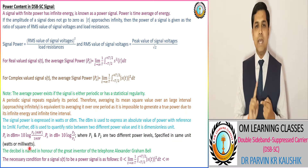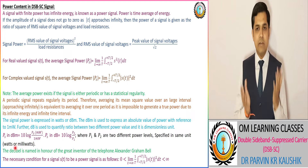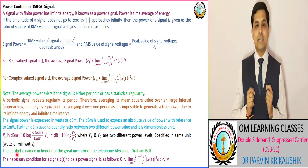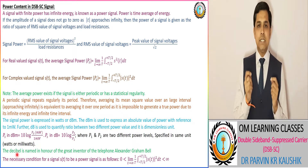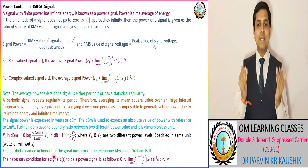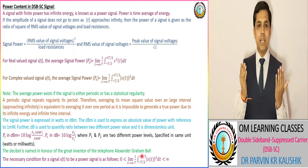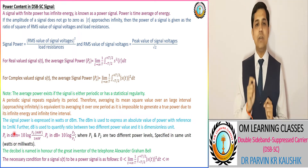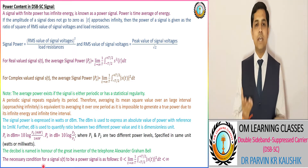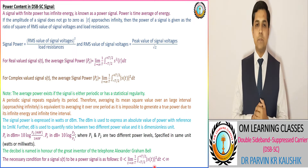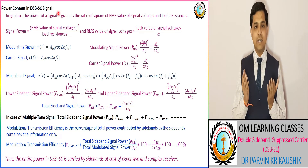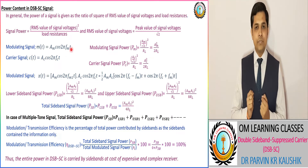The mathematical formula for power in dB is 10 log(P2/P1), where P1 and P2 are two different power levels specified in the same unit — it can be watts or milliwatts. An interesting fact is that in dB, the letter B is written as a capital letter because it is in honor of the great inventor of the telephone, Alexander Graham Bell. The necessary condition for a power signal has been covered.